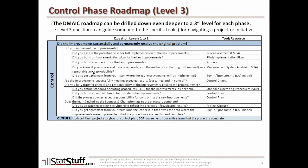Next, ask yourself: do you know if your scorecard data is accurate, and if the collection method — if it's manual — was repeatable and reproducible? Just as we did back in the measure phase when we ran a measurement system analysis, or MSA, to make sure we could trust the data, we're still doing a lot of data collection at this point. If the method is manual, we need to trust the accuracy, repeatability, and reproducibility of the data — which means possibly running another MSA at the end of the project.